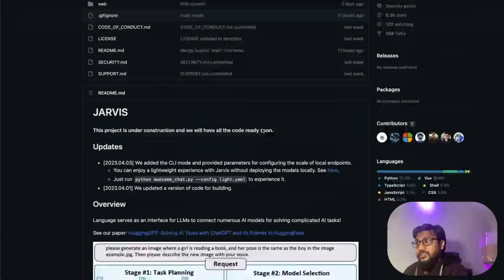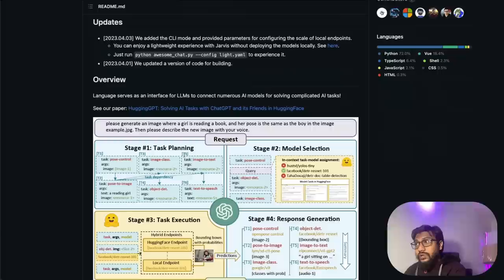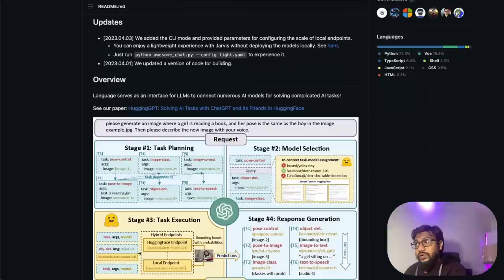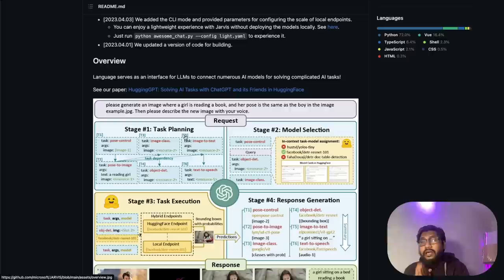Microsoft a couple of days back introduced this new open source project called Jarvis. The code is not completely released, some part of the code is released already. They recently released a paper called HuggingGPT. HuggingGPT is like a system where large language models can talk to HuggingFace Model Hub and try to get things done and then finally come back.